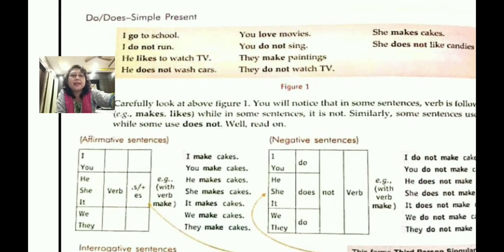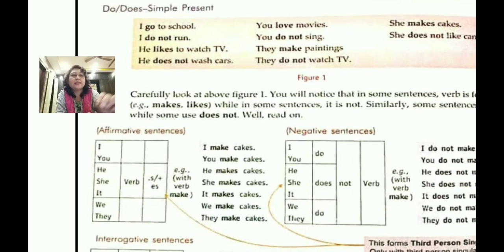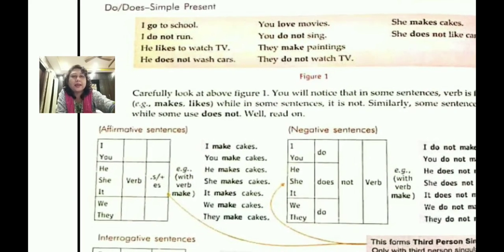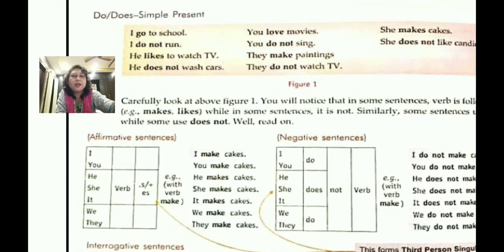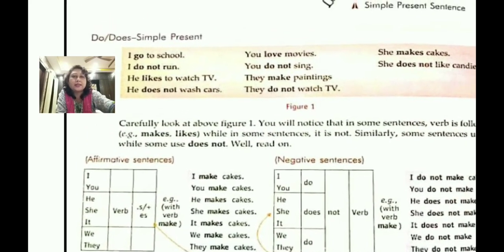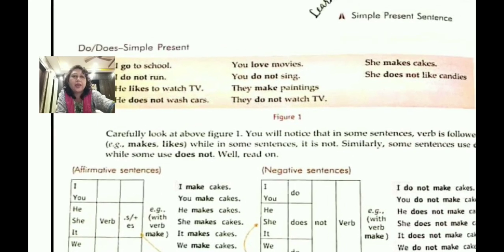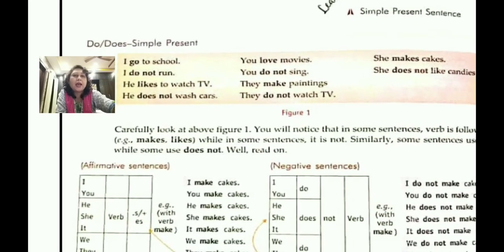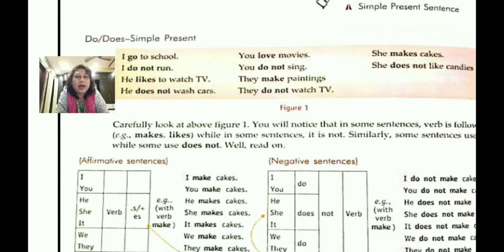Let's look at some examples of do and does in simple present: 'I go to school,' 'I do not run,' 'He likes to watch TV,' 'He does not watch cars,' 'You love movies,' 'You do not sing.'